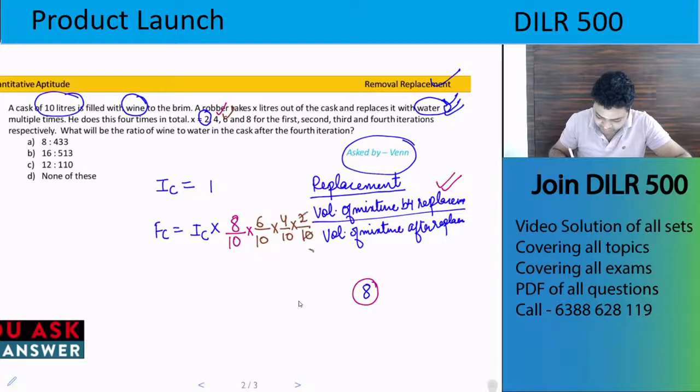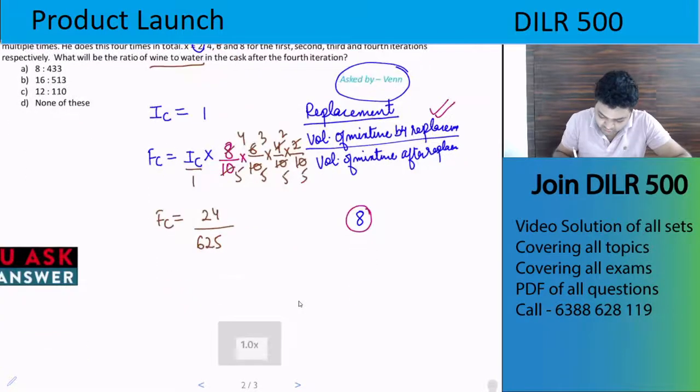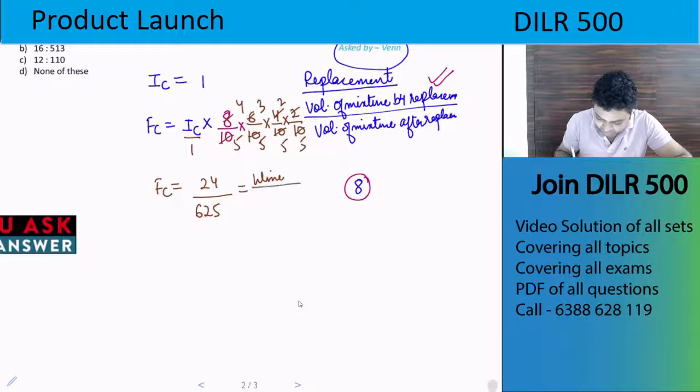We have 8 divided by 10 which is 4/5, then 6/10 which is 3/5, 4/10 which is 2/5, and 2/10 which is 1/5. Multiplying these together: 4/5 × 3/5 × 2/5 × 1/5 equals 24/625. This is the final concentration of wine.